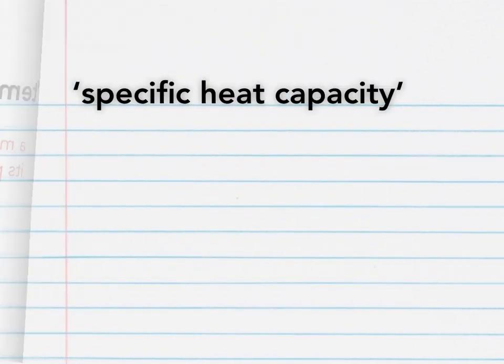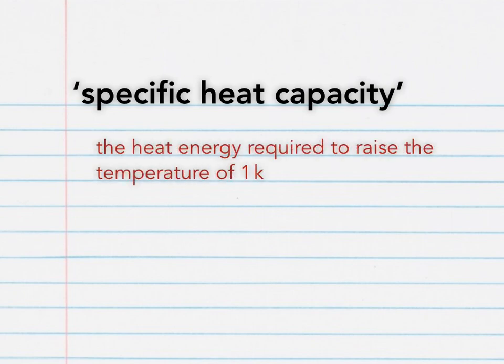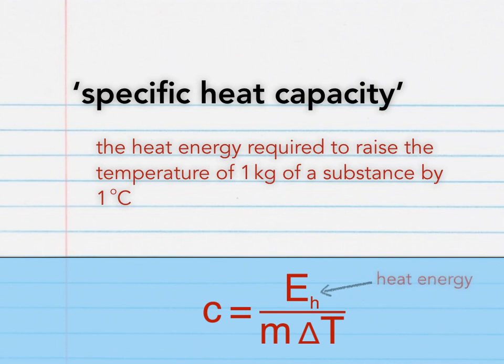Specific heat capacity. This is related to heating a substance resulting in a change of temperature. Specific heat capacity is the heat energy required to raise the temperature of one kilogram of a substance by one degree Celsius. This is difficult to remember, although this equation should help. To make specific heat capacity C the subject, divide both sides by M delta T. So C equals heat energy EH divided by mass M in kilograms multiplied by change in temperature delta T in degrees Celsius. Make sure you can see the link between the equation and definition before moving on.